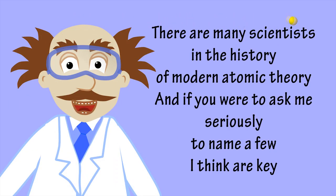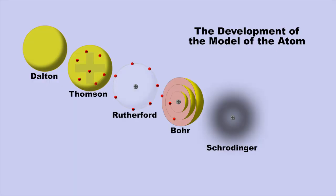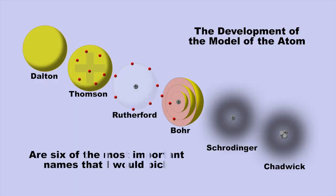There are many scientists in the history of modern atomic theory, and if you were to ask me seriously to name a few I think are key: Dalton, Thompson, Rutherford, Bohr, Schrodinger, and Chadwick are six of the most important names that I would pick.